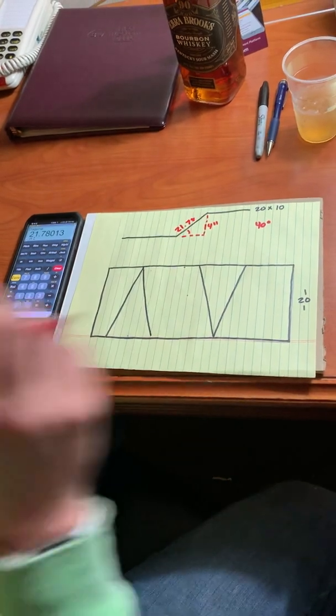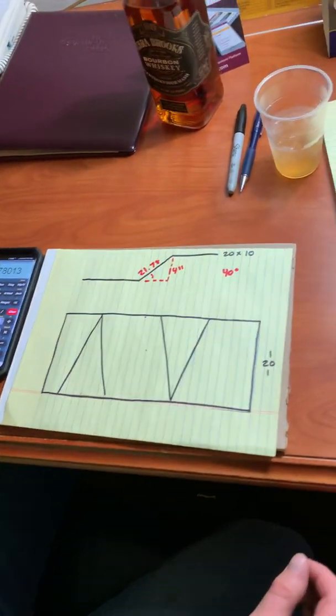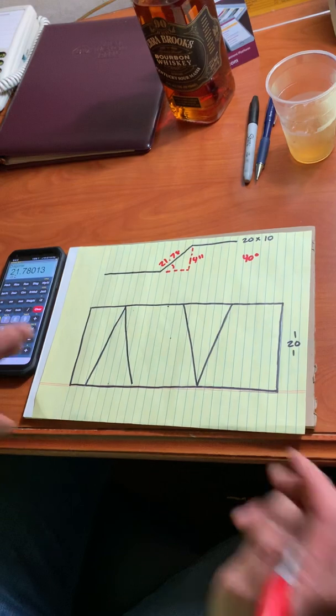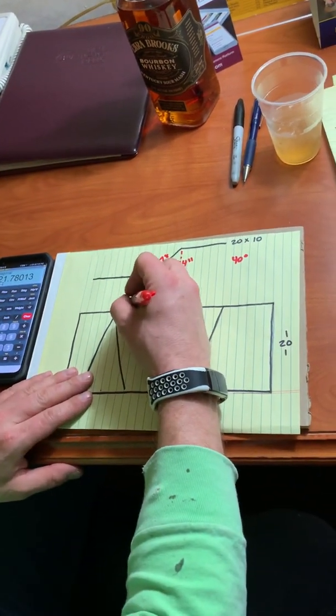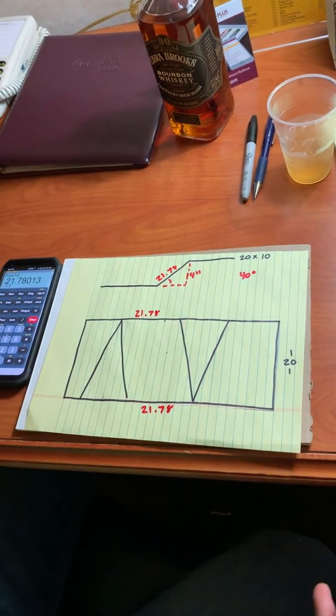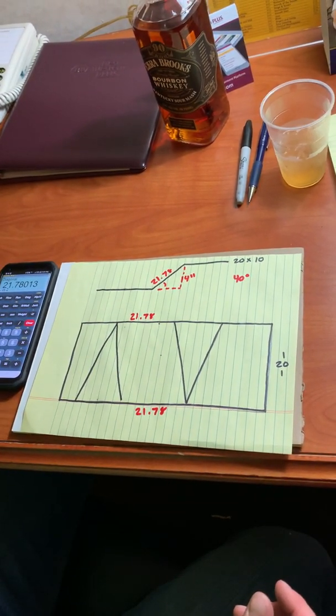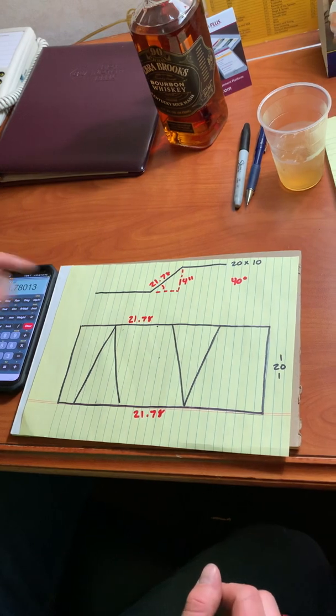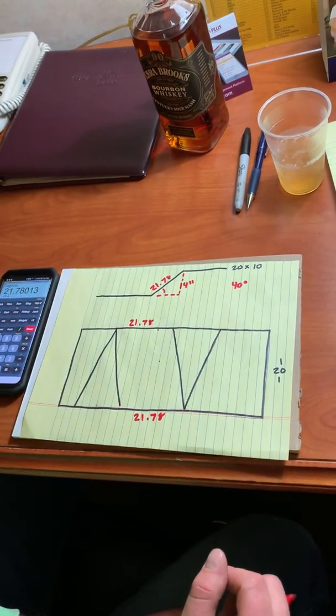Now because we know that the diagonal is 21.78, and that's the centerline dimension, we know that these two numbers are 21.78. We're already starting the piece of our puzzle. We also know that we did a 40 inch, a 40 degree offset.